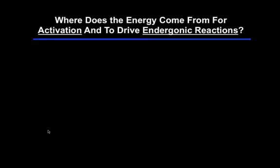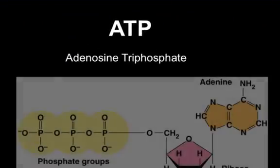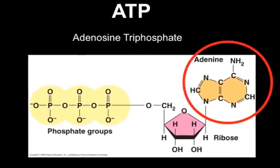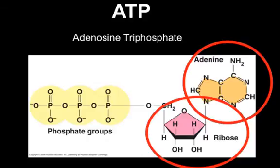But where do your cells get the energy to drive an endergonic reaction and to activate both endergonic and exergonic reactions? Well, it appears to be from an energy molecule that all organisms can make, and that is ATP — adenosine triphosphate. Here's what the molecule looks like. It's made up of adenine, a nitrogenous base bonded by a five-carbon sugar called ribose, and then three phosphate units.